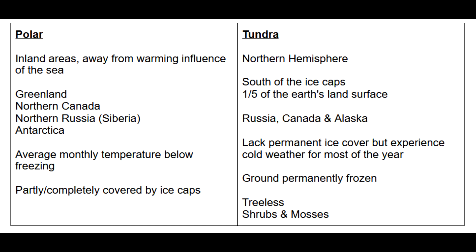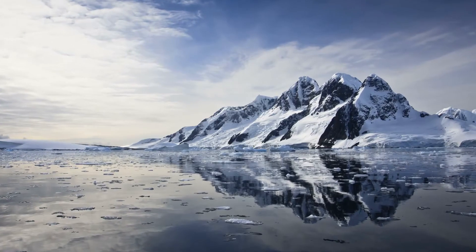In comparison, tundra environments occur in the northern hemisphere, south of the ice caps. They take up a fifth of the Earth's land surface, with examples including Russia, Canada and Alaska. These areas lack permanent ice coverage but experience cold weather for most of the year. Some of the ground is permanently frozen, and these areas are generally treeless, so they have low-lying shrubs and mosses.